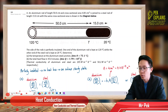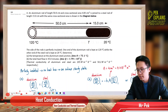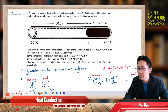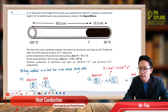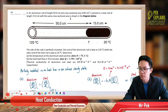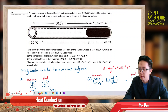Now question 4 in heat conduction. An aluminium rod of length 50 cm and cross-sectional area 4 cm² — this is not in SI unit, so later we need to change to SI units of metres and metres squared — is joined to a steel rod of length 15 cm with the same cross-sectional area, as shown in the diagram below.